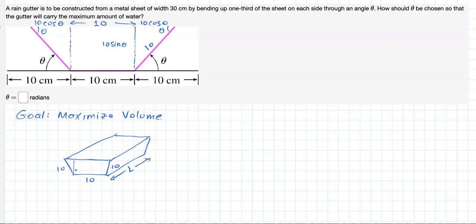The height we're saying is 10 sine of theta, and this base, this base of the trapezoid should be just the sum of these three guys: 20 cosine of theta plus 10.